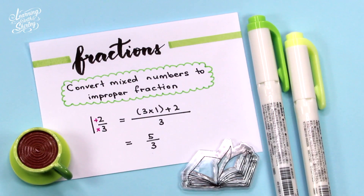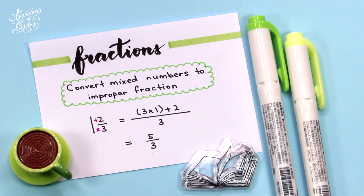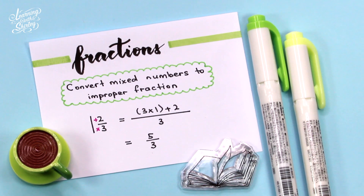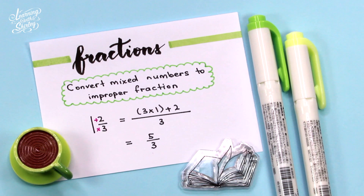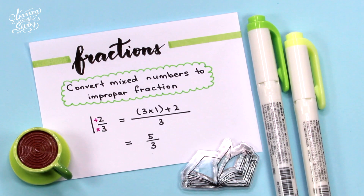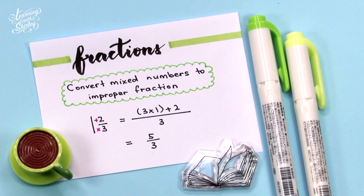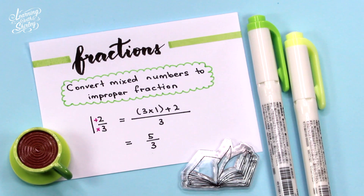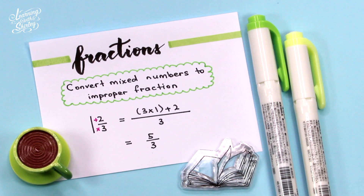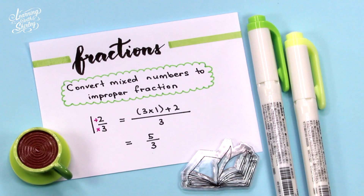How to convert mixed numbers to improper fractions? For example, take the mixed number 1 and 2 over 3. The denominator is 3. We multiply 3 by the whole number 1, then add the numerator 2. So we get (3 times 1) plus 2, all over 3. We make sure the denominator stays the same, which is 3. Therefore, the answer is 5 over 3, which is an improper fraction.